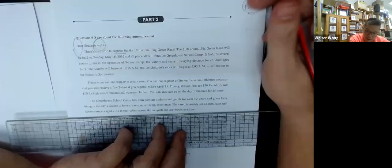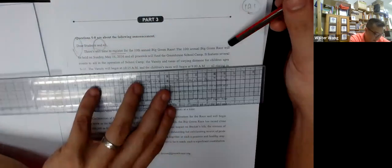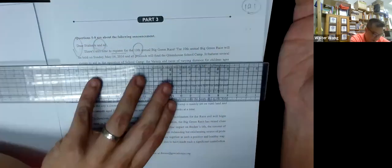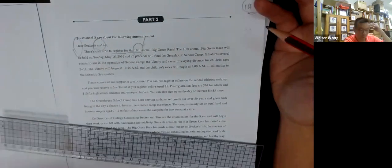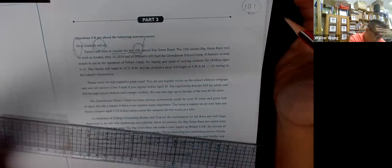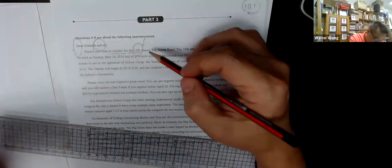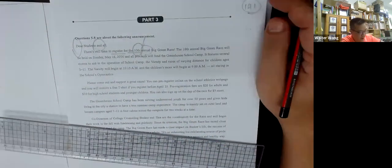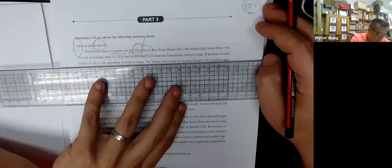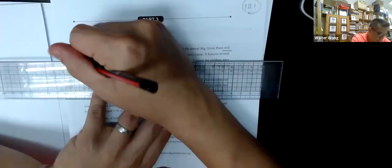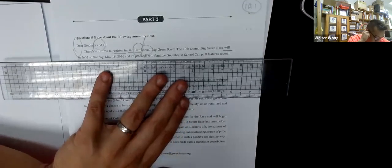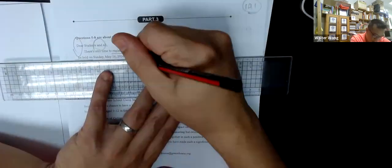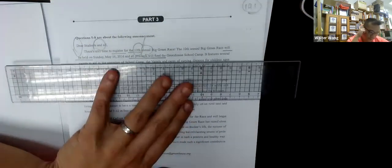There is still time to register. Register means 登記. The 10th annual big green race will be held on Sunday, May 16th, 2016, and all proceeds will fund...